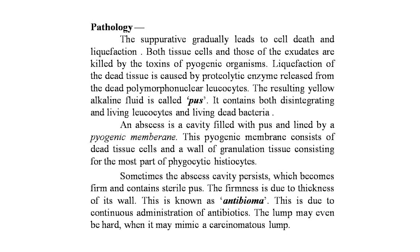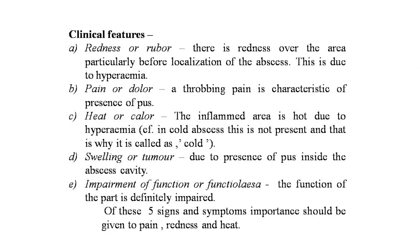Clinical features of abscess: redness (rubor) — redness over the area, particularly before localization, due to hyperemia. Pain (dolor) — a throbbing pain is characteristic. Heat (calor) — the inflamed area is hot due to hyperemia; in cold abscess this is absent. Swelling (tumor) — due to presence of pus inside the abscess cavity. Impairment of function — the function of the part is definitely impaired. Of these five cardinal signs — rubor, dolor, calor, tumor, and impaired function — particular importance should be given to pain, redness, and heat.